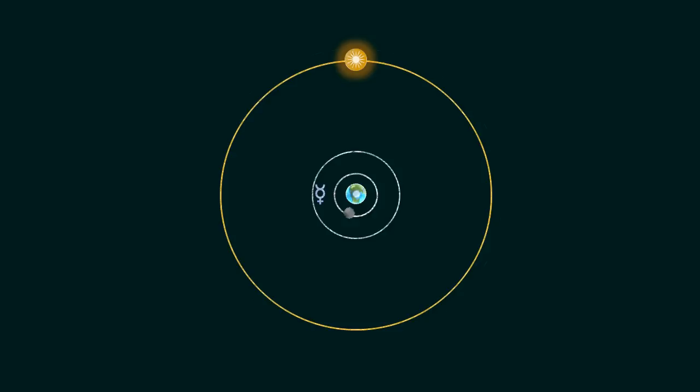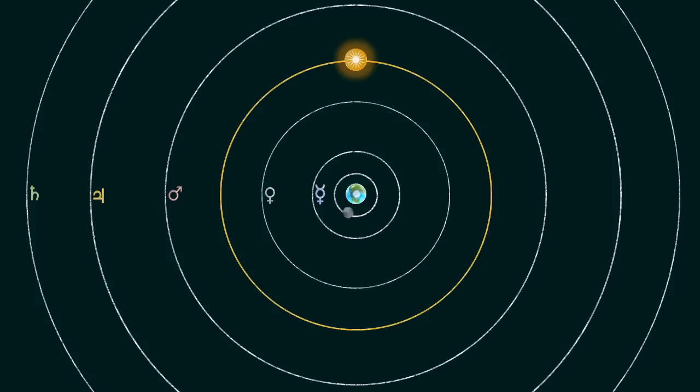we tried to construct geometrical models. We gave each planet a circular orbit around the Earth, but to account for retrograde motion, we had to place the planets on little circles called epicycles.